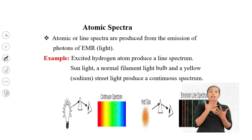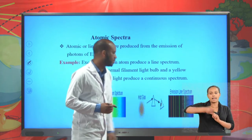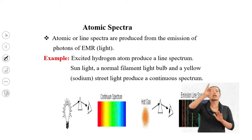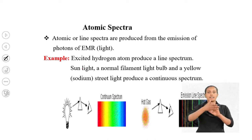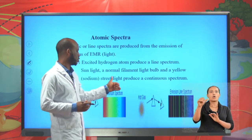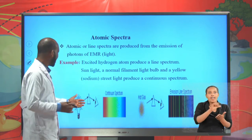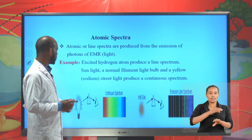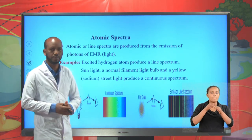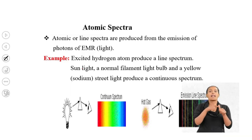For example, an excited hydrogen atom produces a line spectrum — this is an emission line spectrum. Sunlight, a normal filament light bulb, and a yellow sodium streetlight produce a continuous spectrum. If any white light is allowed to pass through a prism, it produces a continuous spectrum where one color merges into the other without a gap.